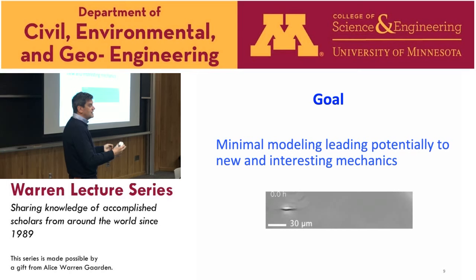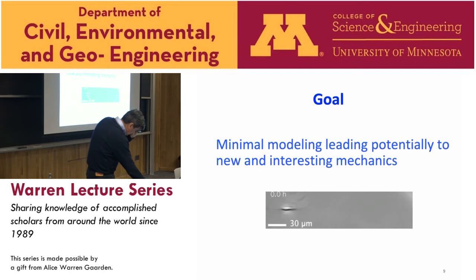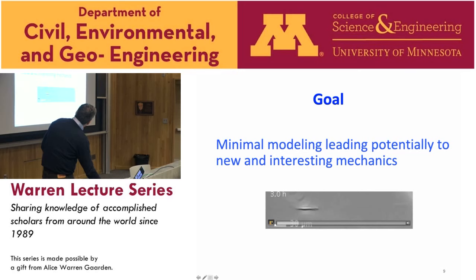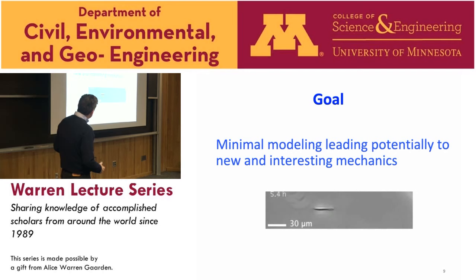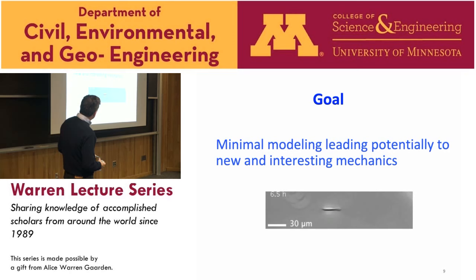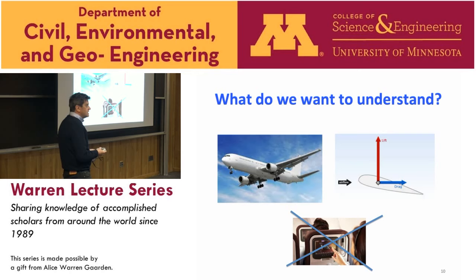The goal is to make minimal modeling leading potentially to new and interesting mechanics. Inside the community there are optimists, who think simple models are possible, and pessimists, who say the complexity cannot be reduced. The simplest case is one-dimensional, and some cells do move on a track. They have a frontal part and a cargo that is part of their body. There is no brain—it is a self-driving vehicle and we want to understand how it works.